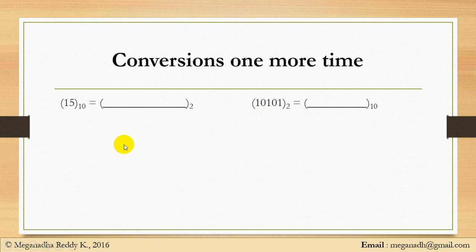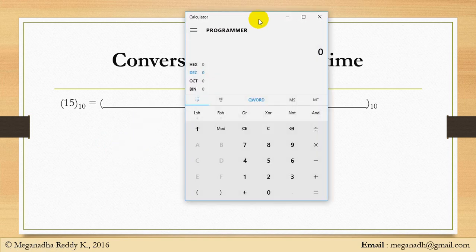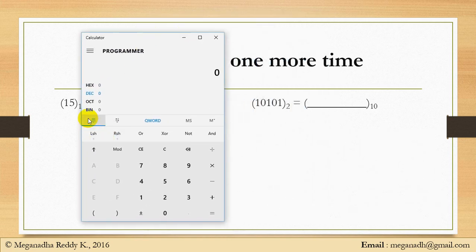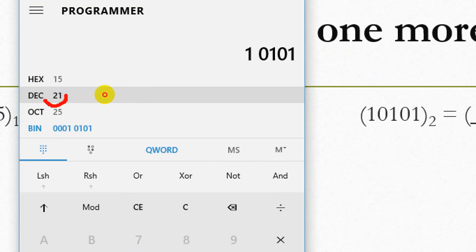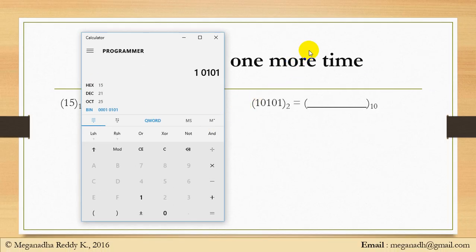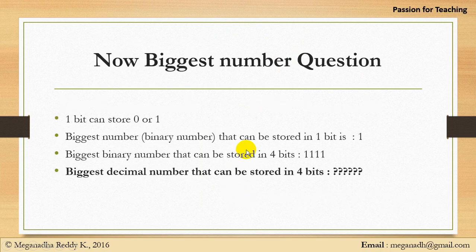Let's quickly verify that in the calculator. I'll open the programmer calculator, select binary, and type 10101. You can see the decimal equivalent is showing as 21, confirming our calculation is correct.